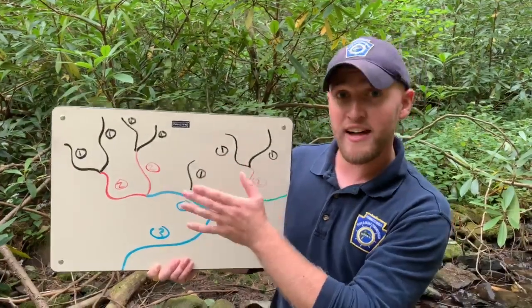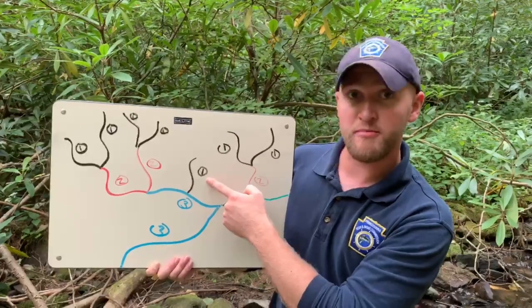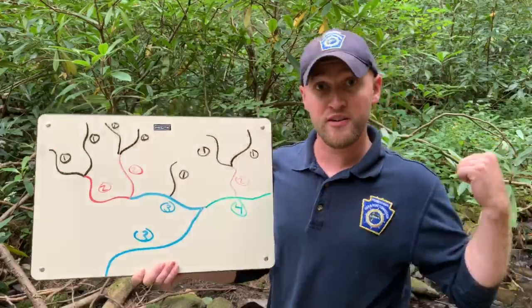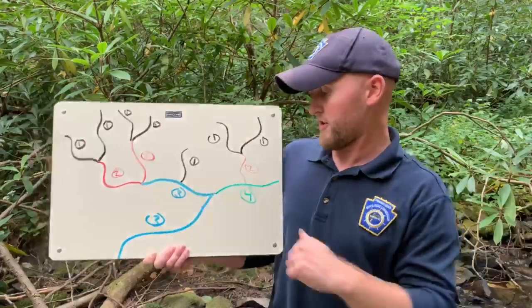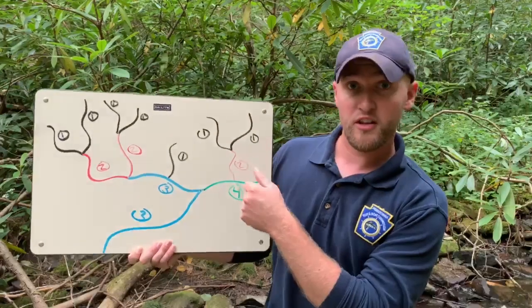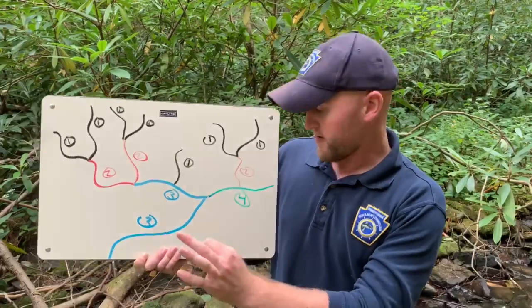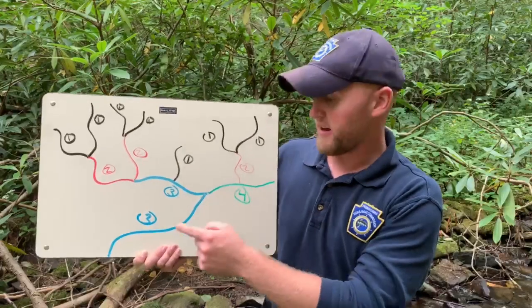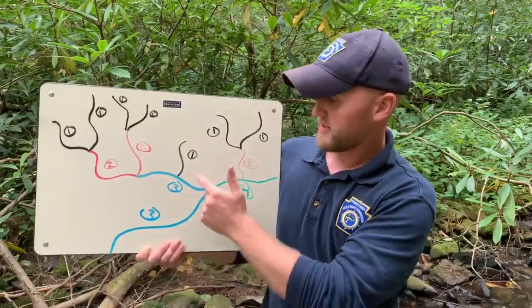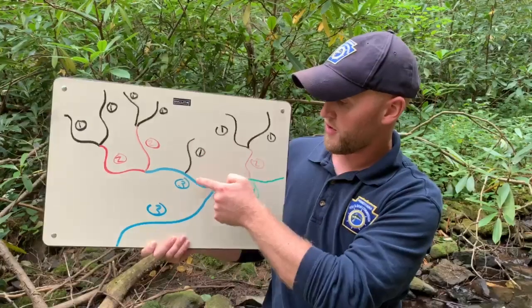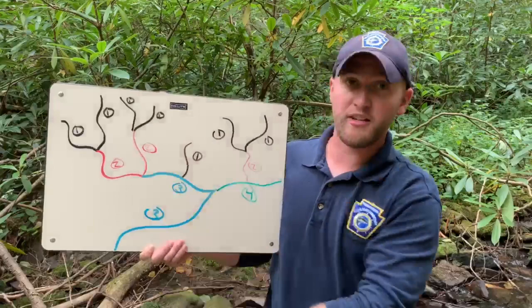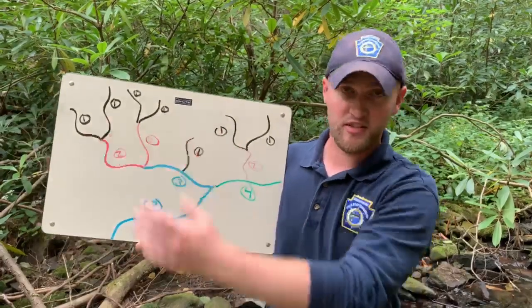It is possible to have a first order stream flow into a third, fourth, fifth, or even sixth order stream. It's also possible to have a second order stream flow into a fourth. The most important thing to remember is that a fourth order stream is formed by two third order streams coming together somewhere down the line. The same applies where a first order flows into a third order — that third order is still formed by two second orders coming together somewhere.